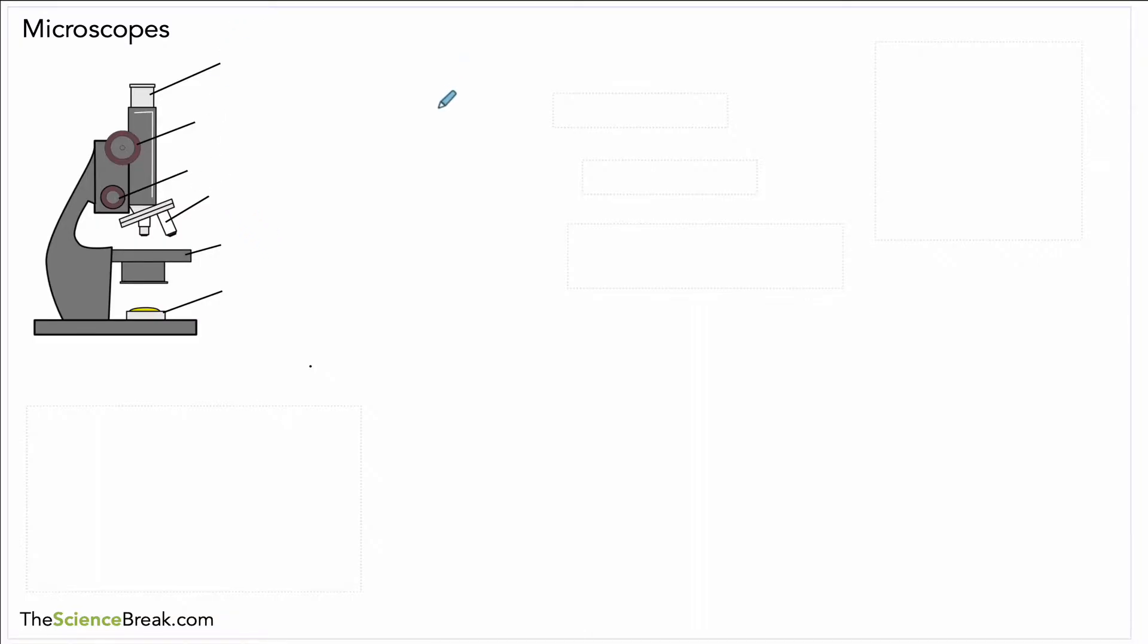At the very top we've got the eyepiece. The eyepiece is the part that you look through. Next one down after that is a round knob which is called the coarse focus. Below that is a slightly smaller one, that's called the fine focus. Then below that we have some lenses with a special name - we call those the objective lenses.